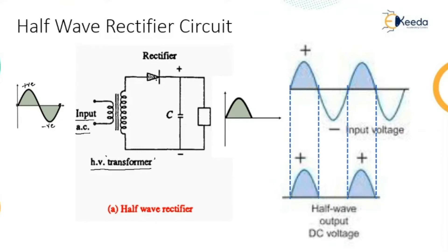The rectifier conducts only in one direction. There is a capacitor connected, and the purpose of that capacitor is to act as a filter. There is then a connection of load resistance connected across the capacitor. During the positive half cycle on the secondary side, the rectifier operates and charges the capacitor to its maximum value.